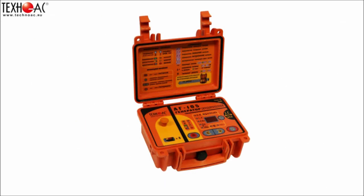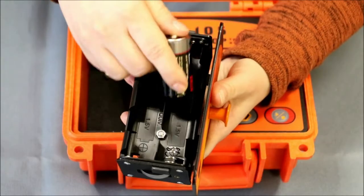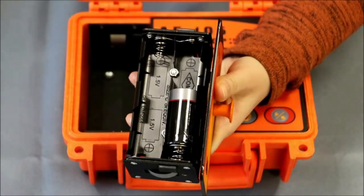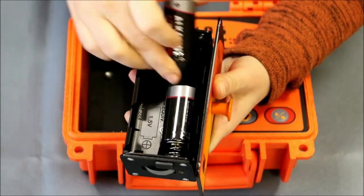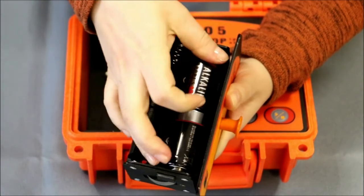For preparation for operation, extract the battery compartment by pulling up the handle. Insert 8 batteries and install the compartment back to its place. When the transmitter is turned on, the numeric display indicates the type of used power supply.